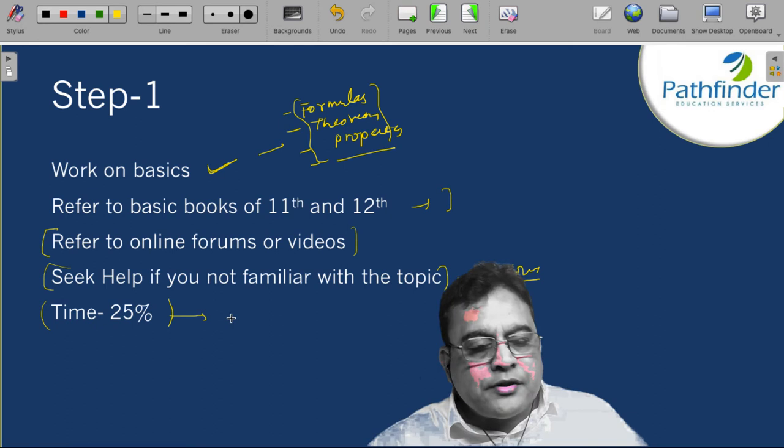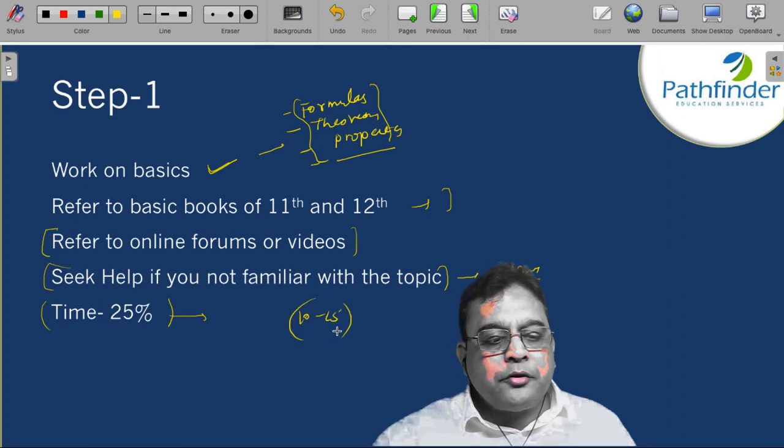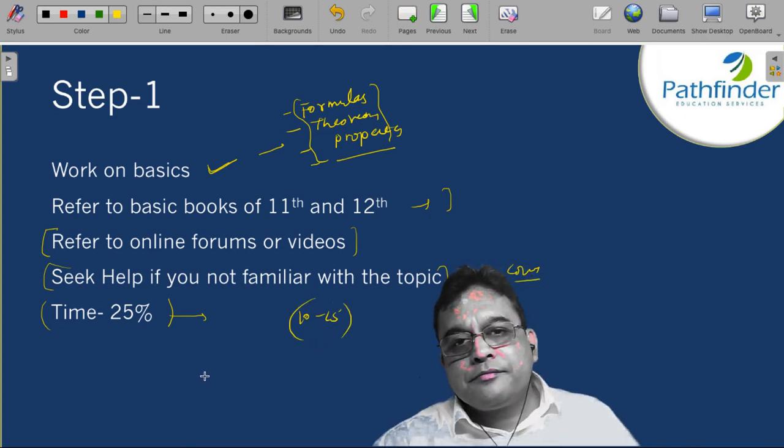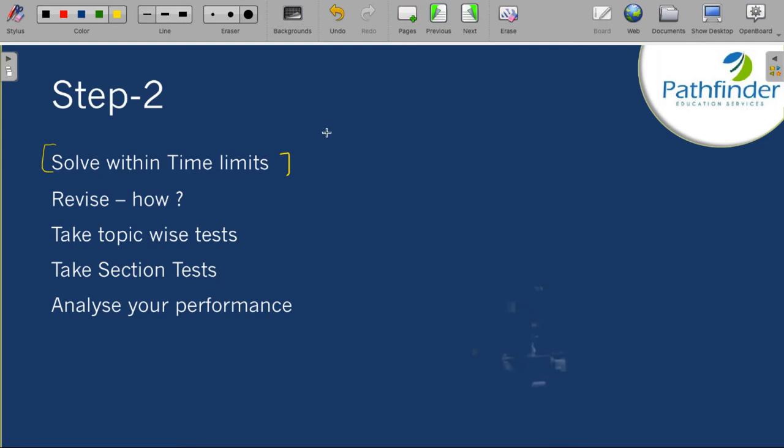Next, allot around 25% of available time to basics only because basics still will form around 10 to 15% of your test and that is why make sure that you allot around 25% of the time to basic studies. Next, now this is important. Many people make this mistake of not learning to solve without time limits because solving within time limits means solving under pressure and in an examination situation you will always be under pressure of some time limit to solve a particular question.